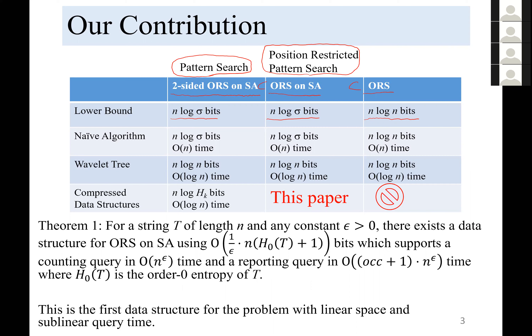The naive solutions are as follows. For two-sided ORS on suffix arrays, we just store the string itself and scan it. The space is L·log(Sigma) and time is O(n). For ORS on suffix arrays, it is the same. For ORS, space is L·log(N) and time is O(n).